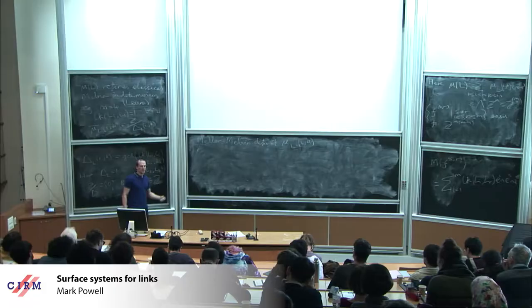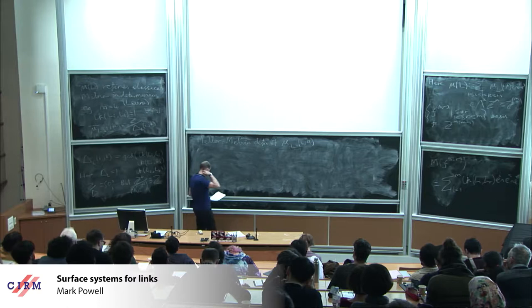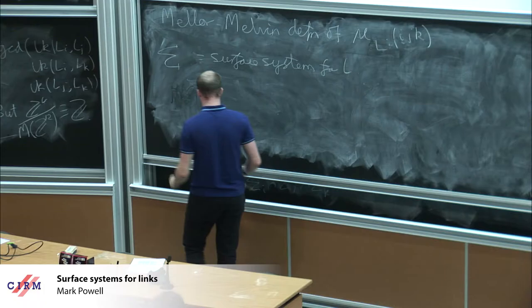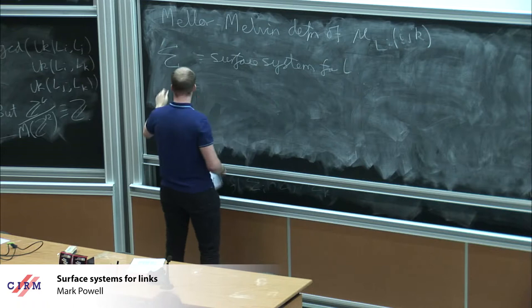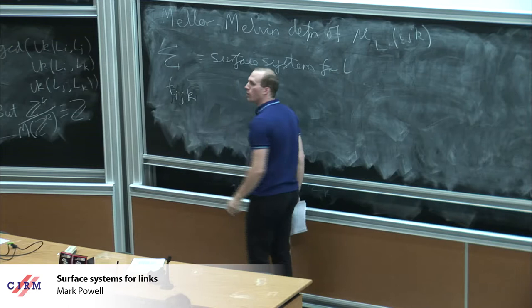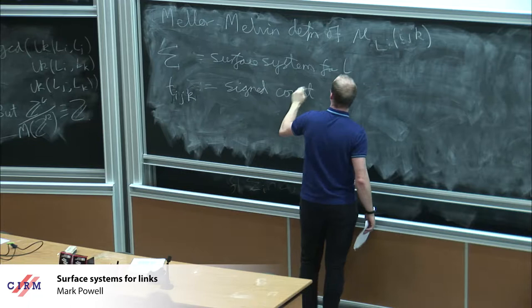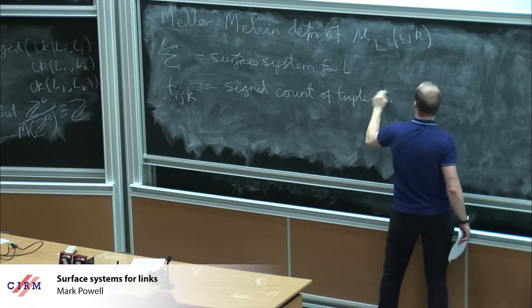The first thing is: let sigma be a surface system for L. We then define this quantity T_ijk — that's the signed count of triple points between the components i, j, and k. Now there's a more complicated part of this definition, but it's the part that's really algorithmic.